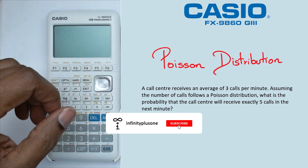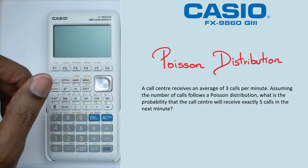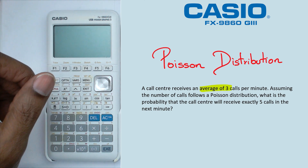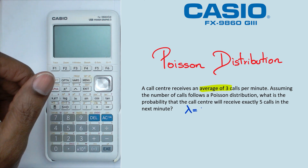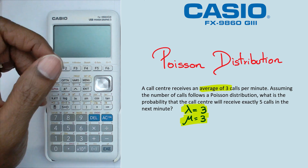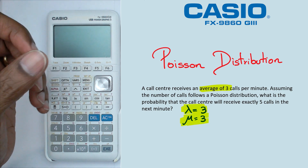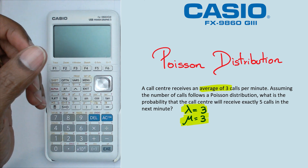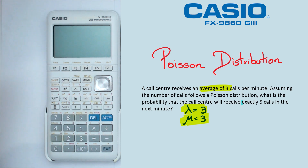The first thing we want to do is figure out what lambda for this particular Poisson distribution is. Here it says that it is an average of three, so lambda is equal to three. In the calculator, we're going to say that the mean is equal to three — an average of three calls per minute. The next part is we want to figure out the probability of exactly five calls, so we're looking for P(X = 5).